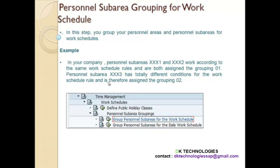In your company, personal sub-areas XXX1 and XXX2 are two personal sub-areas that work according to the same work schedule rules and are both assigned the same grouping. For example, they have the same working pattern — early shift, afternoon shift, and night shift. Instead of generating a work schedule for each personal area separately, you group them in a single group and generate the work schedule for that group, making it applicable for all personal sub-areas belonging to that group.